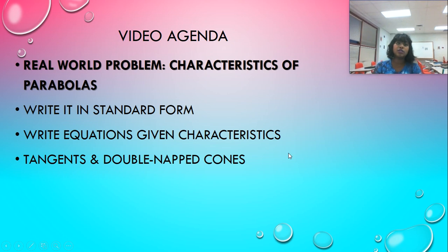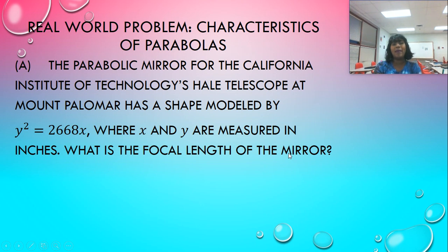All righty. So our next topic is going to be real world problems. So what if I'm given a word problem? How do I solve it if it's got the characteristics of a parabola? So we have a parabolic mirror from the California Institute of Technology's Hale Telescope, and it's located at Mount Palomar and has a shape modeled by this formula,